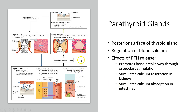Calcitonin also helps to stimulate the building of bone. So if we break down bone with lower calcium levels, this eventually causes the secretion of calcitriol, which can then replace the bone that was broken down.